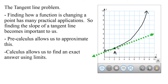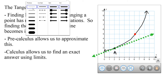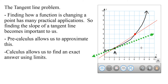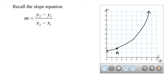In pre-calculus, we could approximate the tangent line — the green dotted line — by picking a point close to the desired point A and drawing a line between those two values. The red solid line has a slope greater than the green dotted line, but it's very close. The y-intercepts aren't the same, but they're close. What we can do in calculus is find a way to make this red solid line more like the green dotted line.